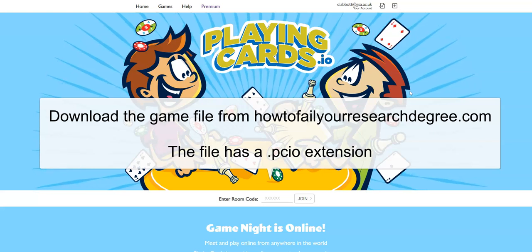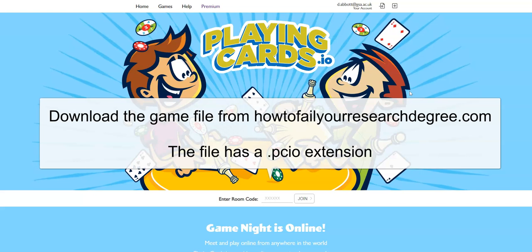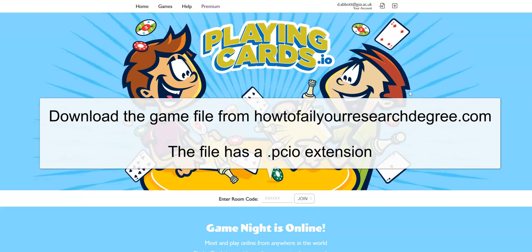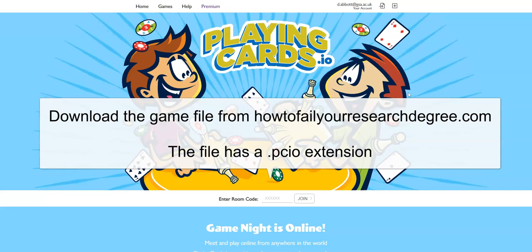The first thing you will need to do is go to howtofailyourresearchdegree.com and download the file with the extension .pcio from the game resources page.